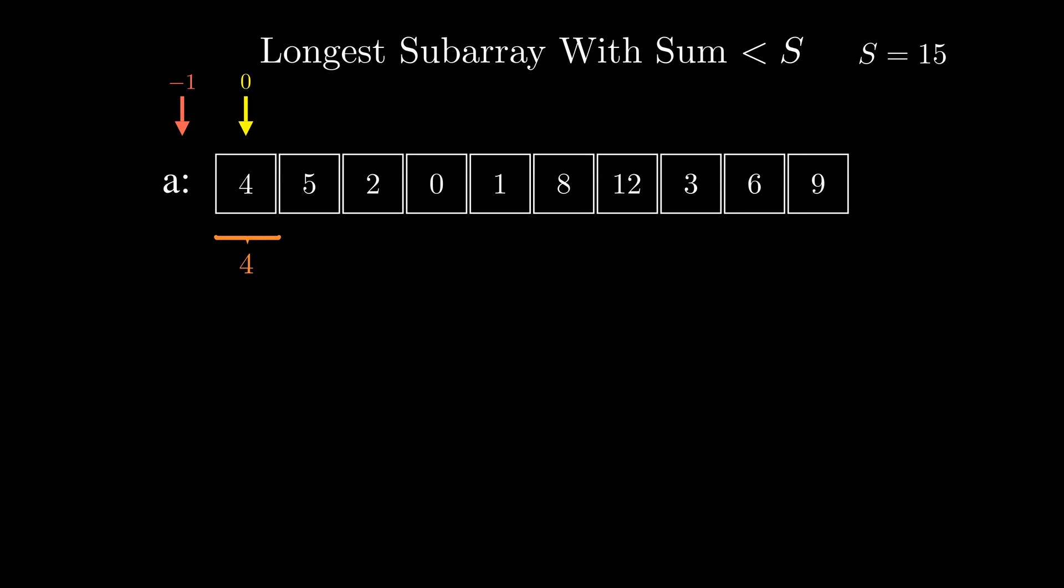Let's see the algorithm in action. We can initialize the left pointer to point before the beginning of the array, initialize the current sum and the best answer to zero and after that move the right pointer from the beginning of the array up to the very end and on each iteration update the current sum and adjust the left pointer to make sure that the current sum is smaller than s.